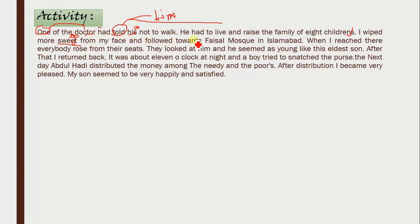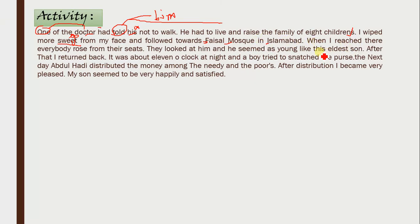'And followed towards Faisal Mosque.' Faisal Mosque is correct — F capital and M capital. Similarly, Islamabad — I capital. These are correct as proper nouns.